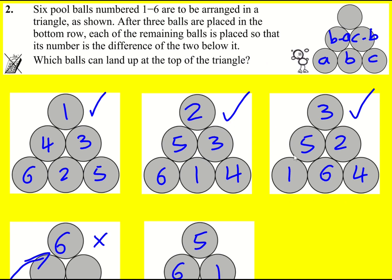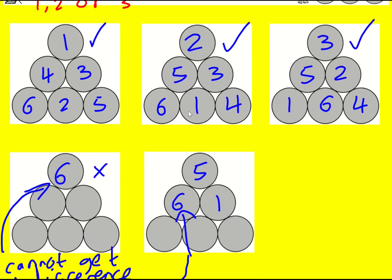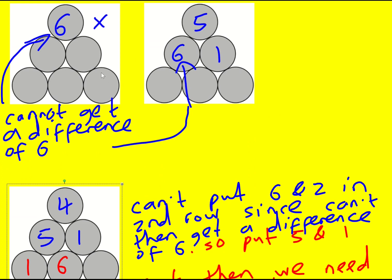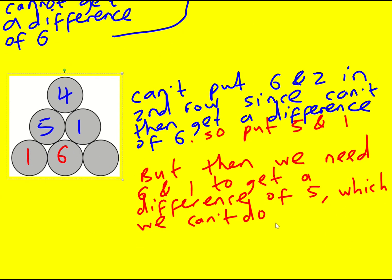And therefore, which balls can land up at the top of the triangle? 1, 2, or 3. It just seemed like a good idea to start from the opposite end. These were quite simple; 4 is the trickiest one, but I've argued here why it can't work. So we're sorted.